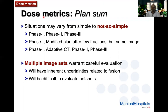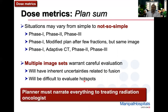One of the last things in dose metrics is the plan sum — when you add different plans together. Situations may range from simple to not so simple: phase one, phase two, phase three; a modified plan after a few fractions on the same image; or multiple image sets. All warrant very careful evaluation. Plan sums will have inherent uncertainties related to fusion, making it difficult to evaluate hotspots. The planner must narrate all of this to the treating radiation oncologist at the time of plan evaluation and approval.